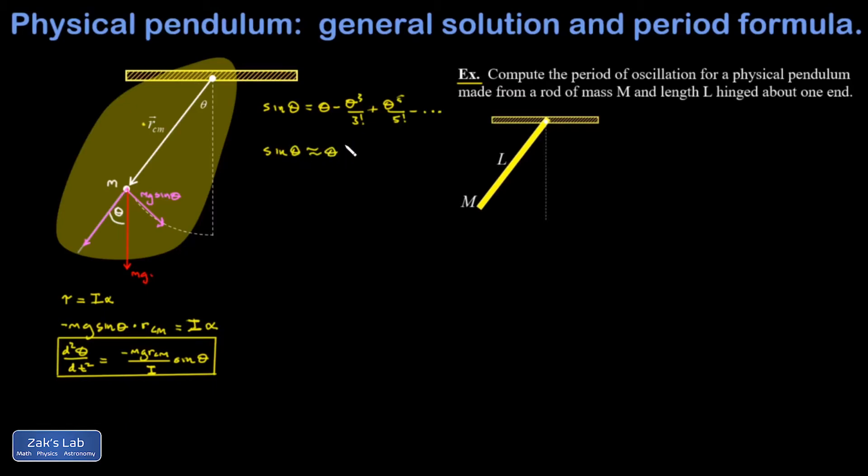This is in radians, by the way. And I ran the numbers today and found out that with an angle of 15 degrees, you only get about a 1% error by making this approximation. If you want less error, you can make theta even smaller.